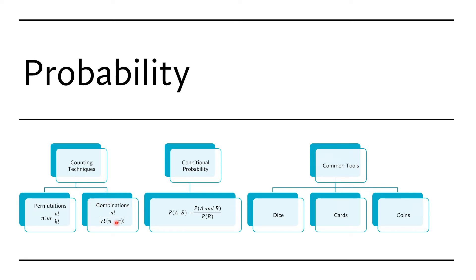Combinations are also very common. The difference from permutations is that combinations do not care about arrangement. So A, B, C is the same as B, C, A or C, A, B — there's only one combination of three items taken three at a time. But if you take one item at a time from three items, there are three combinations: A, B, or C. The formula uses r as the number of items taken at a time.